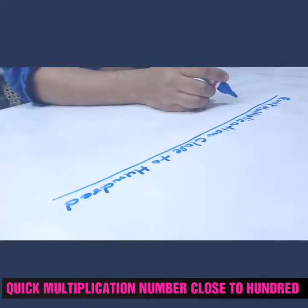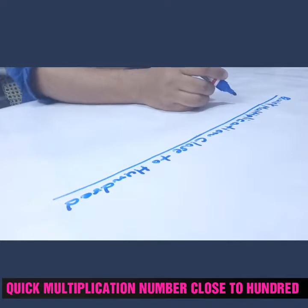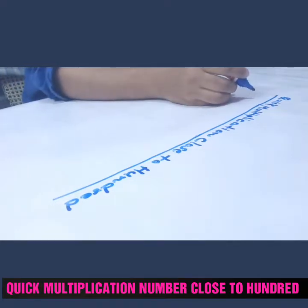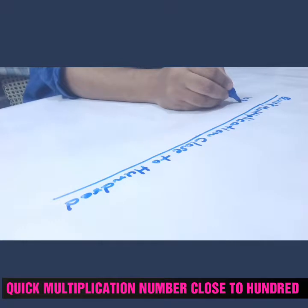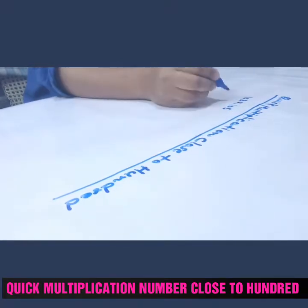Friends, today we are going to learn quick multiplication for a number which is very close to hundred. This is very simple. If you have a question like 102 into 105, so these are the numbers which are very close to hundred. It means the number which is greater than a hundred or the numbers which is less than hundred.